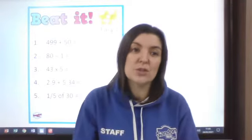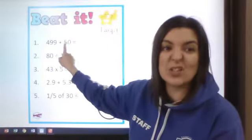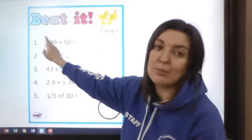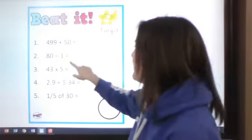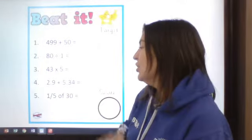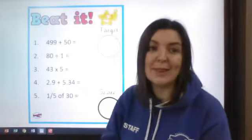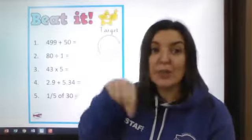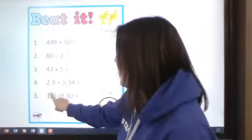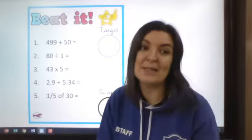I'm just going to go through a couple of things, just in case you have forgotten. For the first one, remember this is going to bridge over to the next hundred because you've got 499. Look really carefully at the tens column, but it'll also affect the hundreds because it's going over. Dividing by 1, be really careful. Multiplying by 5, you could do a little short multiplication, or you could do 40 times 5, 3 times 5 and quickly add them together. For decimals, you might want to jot those down, but make sure you line up the decimal point. And finally, you've got a fraction one - this is a fifth of 30, so you might just divide by the denominator, which is 5.